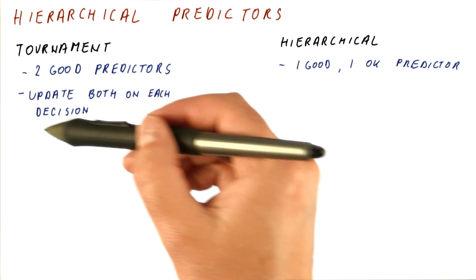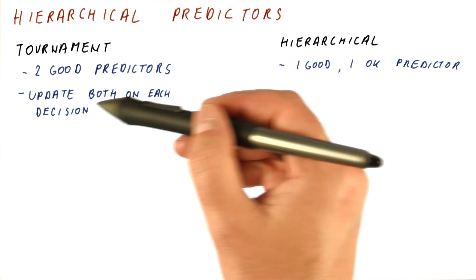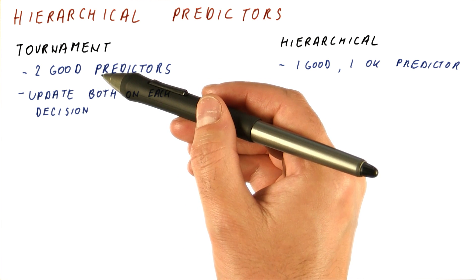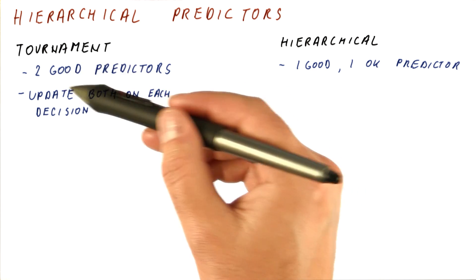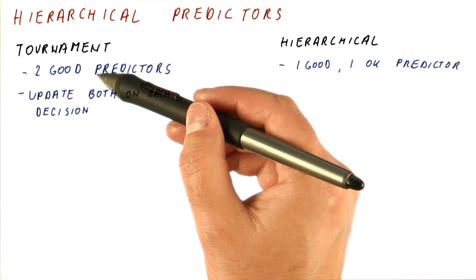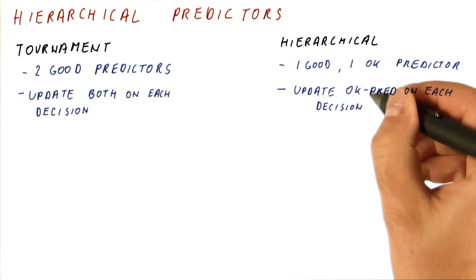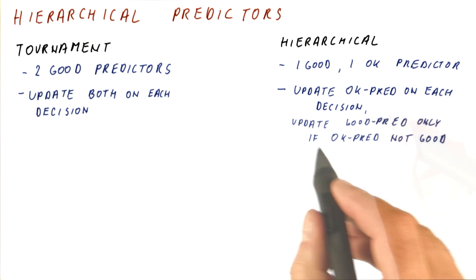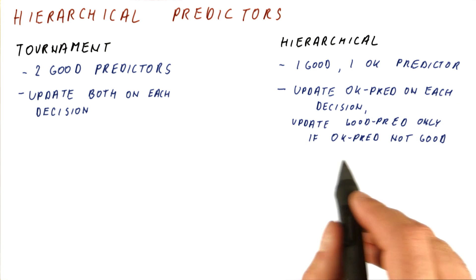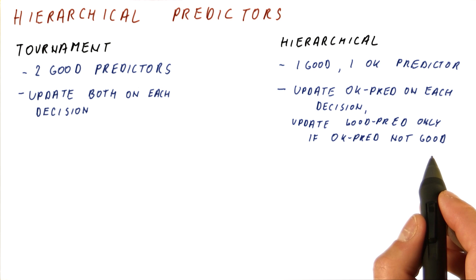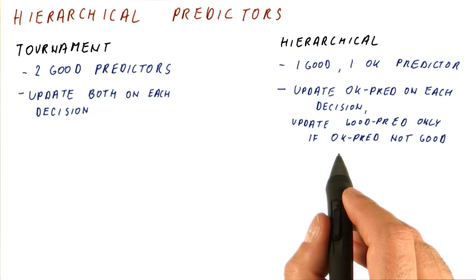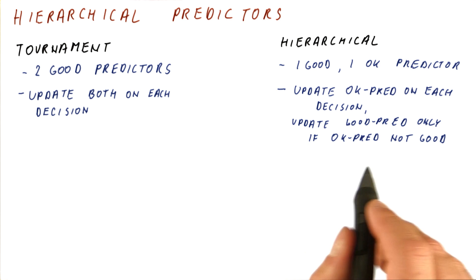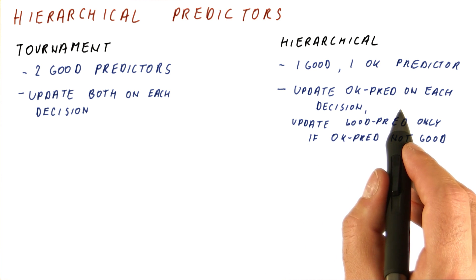In the tournament predictor, you update both predictors on each decision so that they can both stay current with what's going on, and thus they both try to do their best on each branch decision. But in the hierarchical predictor, you might update the okay predictor on each decision, but you update the good predictor only if the okay predictor did not work well for that branch. The idea is to not use the entries of the good predictor if the okay one is doing fine on that branch.